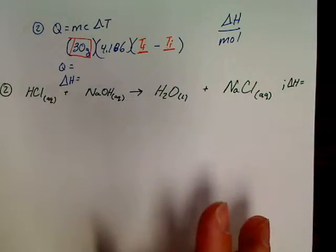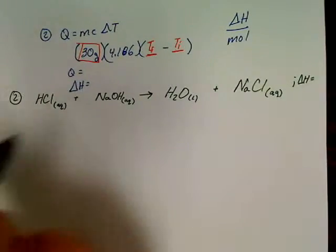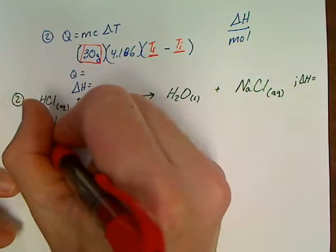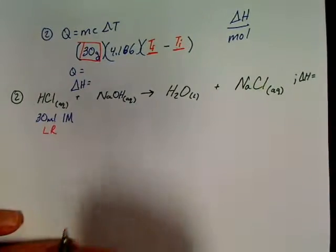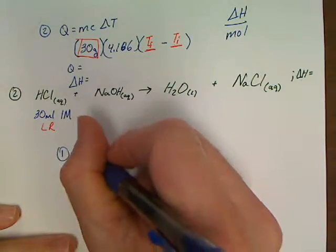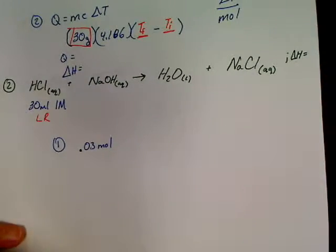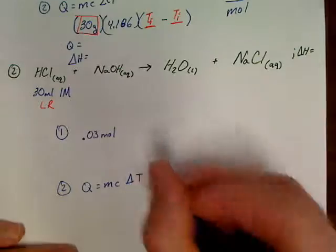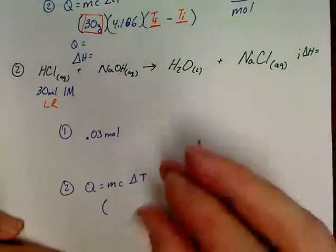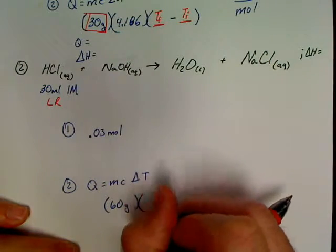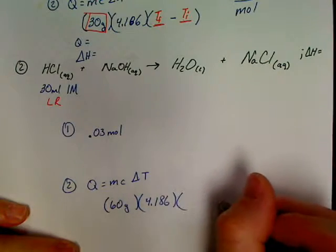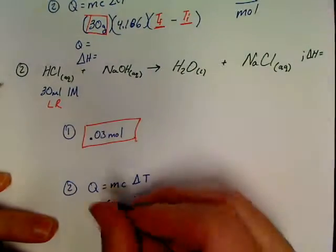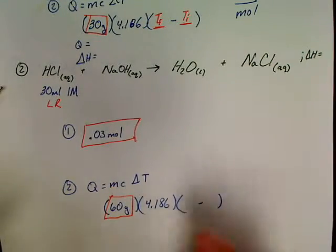On this one, I kind of picked my numbers for a reason again. You've got 30 milliliters of one molar HCl, and we're going to actually use this to be our Limiting Reactive. Step number one is already 0.03 moles again. Step number two is going to be Q equals MC delta T. We're going to use a mass of 60 grams for water on the second one times 4.186 times your two temperatures.